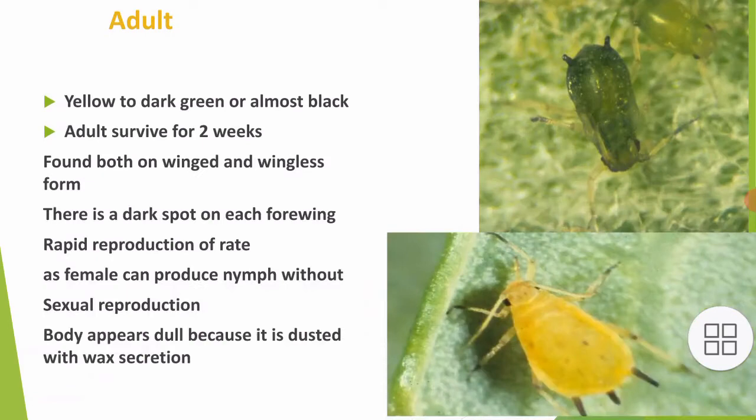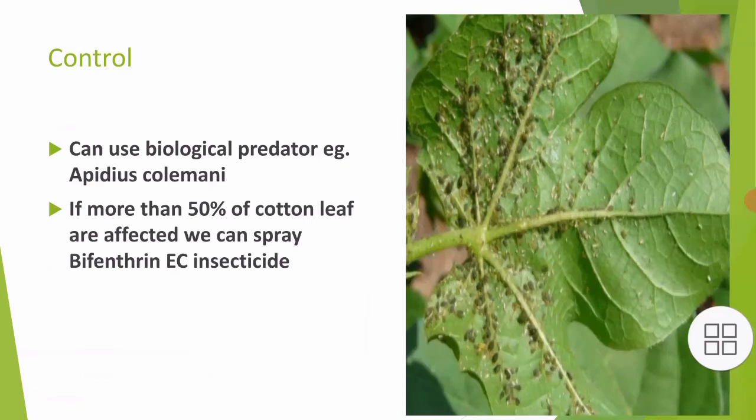Adults are yellow to dark green or almost black in color. They survive for 2 weeks and are found in both winged and wingless forms. There is a dark spot on each of the four wings. A rapid reproduction rate is seen in aphids, as females can produce nymphs without sexual reproduction. The body appears dull because it is dusted with wax secretion.